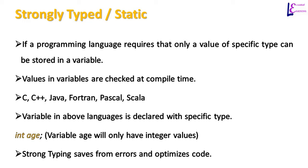Popular languages in the strongly typed category are C, C++, Java, Fortran, Pascal, and Scala. In all of these languages, a variable is declared with a specific type. For example, with int age, the variable age will store only integer values. If we try to store a decimal value in int age, the compiler will throw an error.